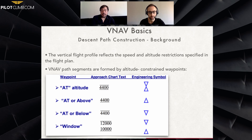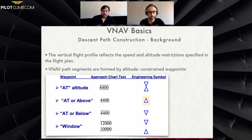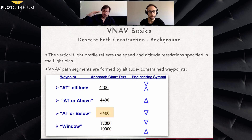For 'above altitude,' you can see a line underneath the altitude value — for example 4,500 feet — and in the VNAV the symbol is a triangle pointing upward. The opposite, 'below altitude,' has a triangle pointing down with a line on top, meaning 4,500 feet is the maximum altitude.